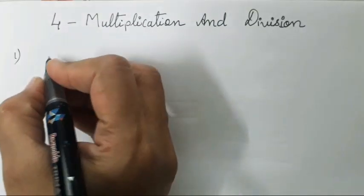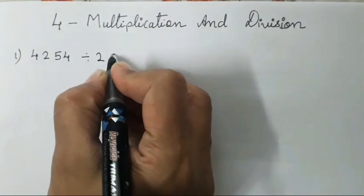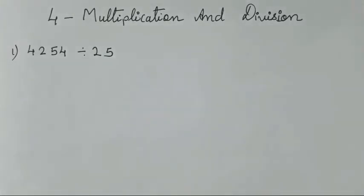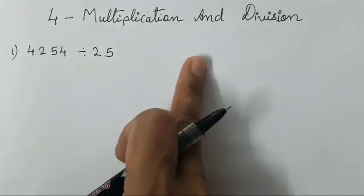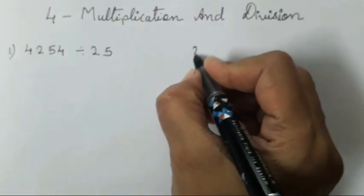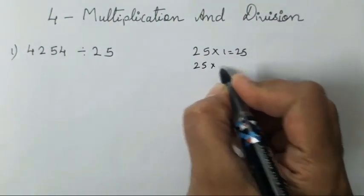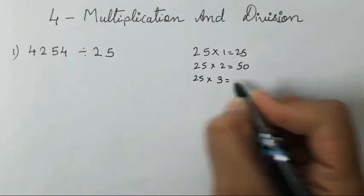I will write the first problem: 4254 divided by 25. Now many of you are going to directly start the division, but first what you have to do is write the multiplication table of 25. So 25 ones are 25. Writing the table and keeping it ready means it will be easy for you to divide.